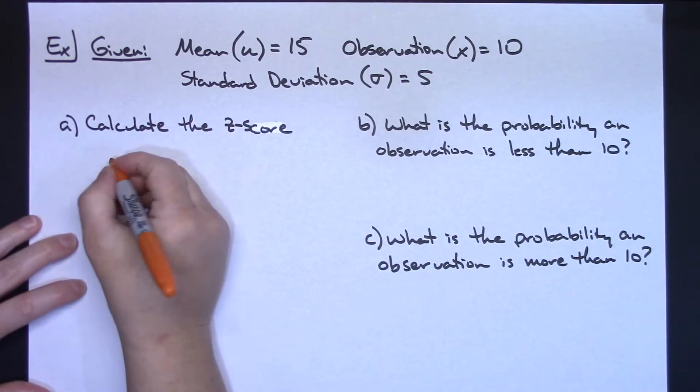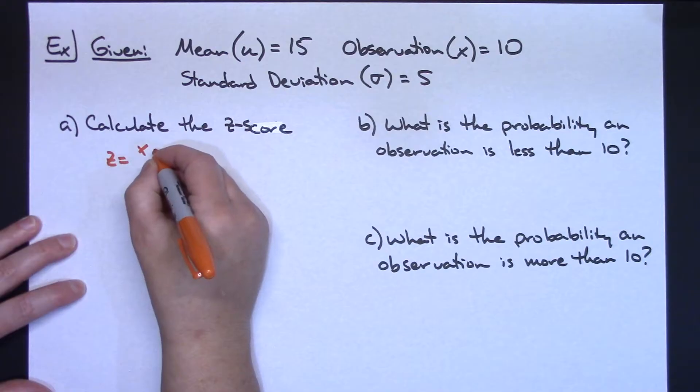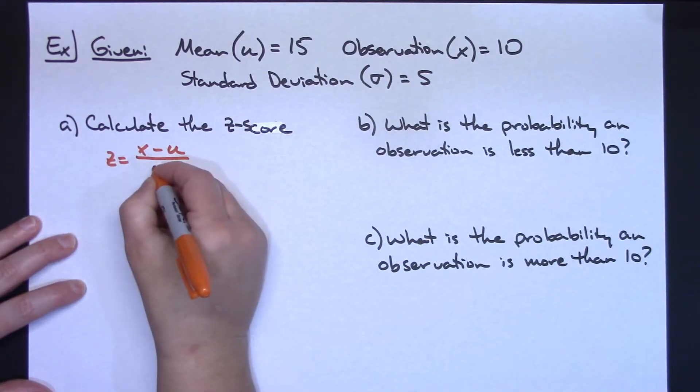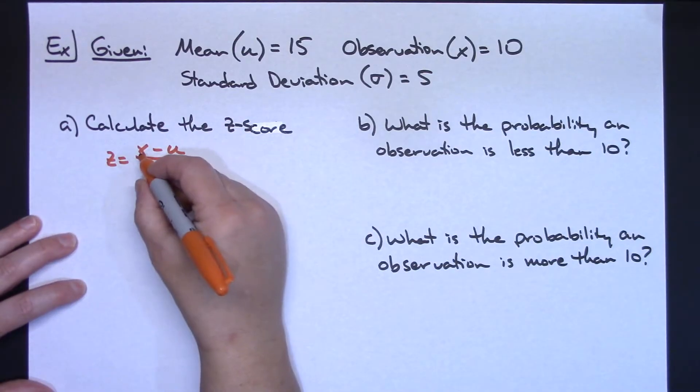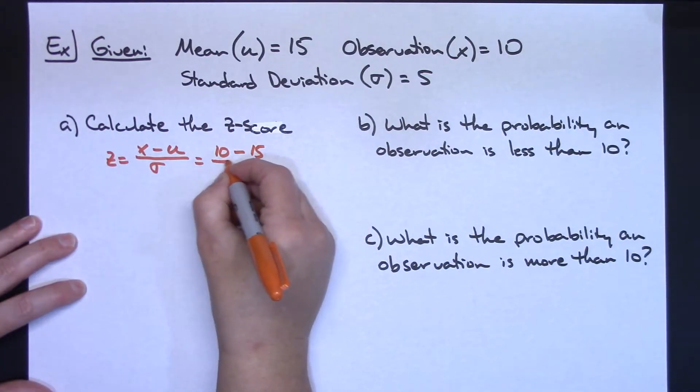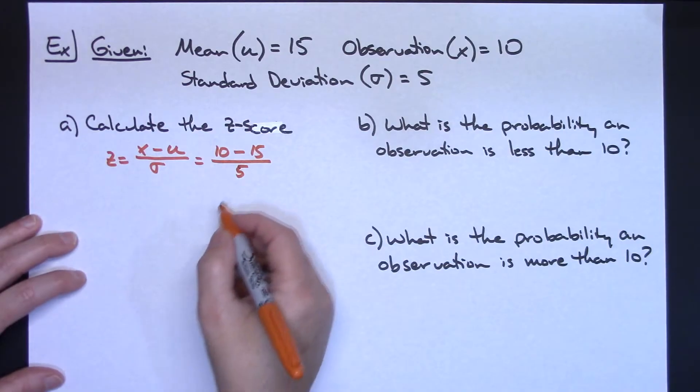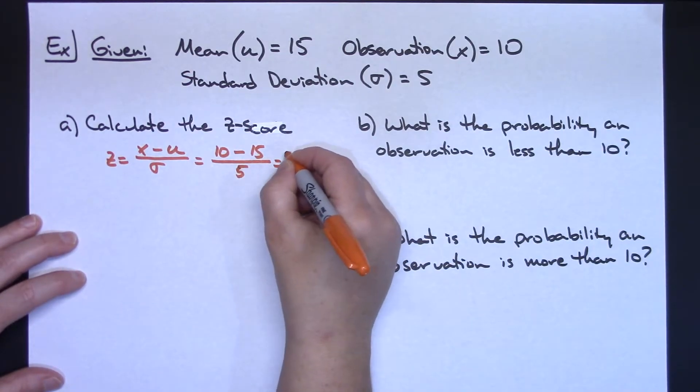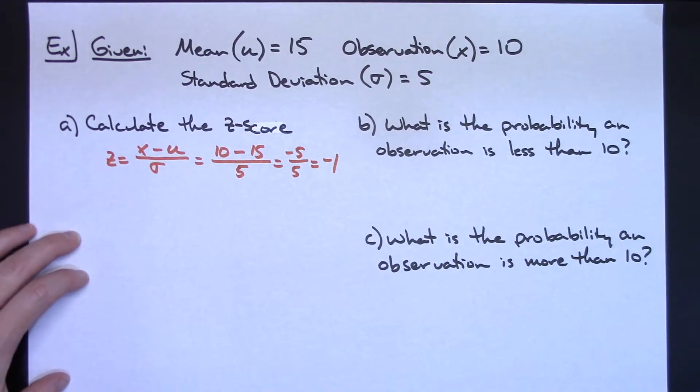So let's use our formula. Our formula is z equals our observation minus our mean all over our standard deviation. So for us, this is going to be our observation, which is 10, minus the mean, which is 15, all over the standard deviation, which is 5. That's going to give us a negative 5 over 5, which is going to give us a z-score of negative 1.